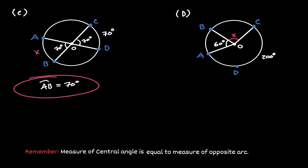In example D, the objective is to find the value of the central angle BOC. If we consider the central angle of 60 degrees, we can conclude that arc AB is also 60 degrees. So now we know the measurement of arc BDC, which is 260 degrees.